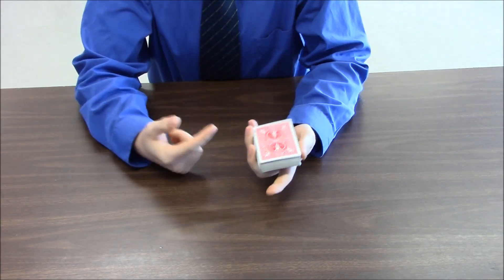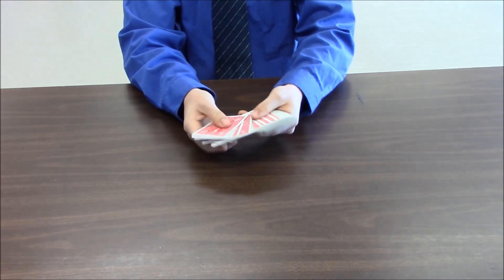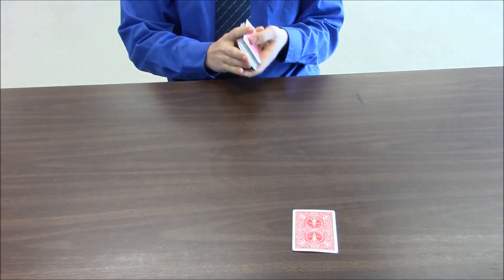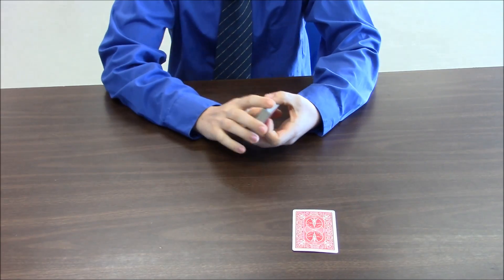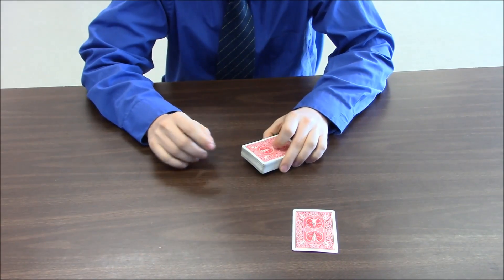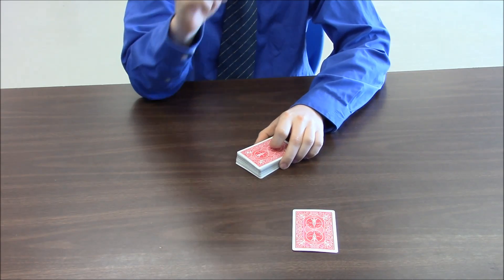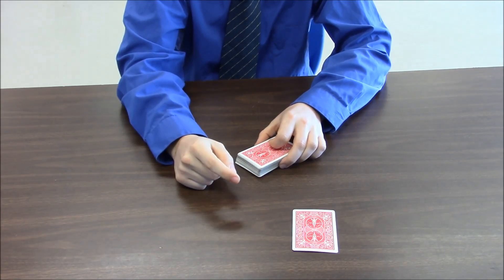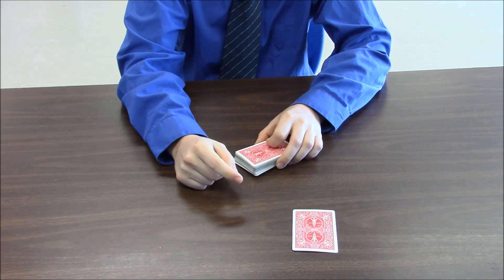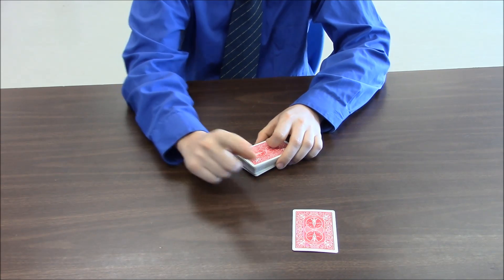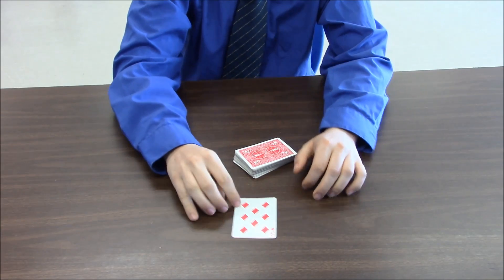And now before explaining the way that you do the trick, I'll perform the trick. So say someone chooses a card. So now I've not flipped the card over, not seen what the card was, but I know that this card is the eight of diamonds.